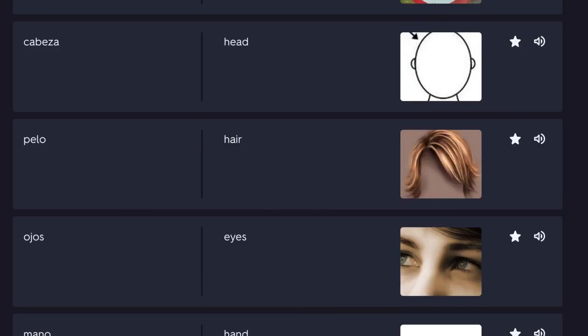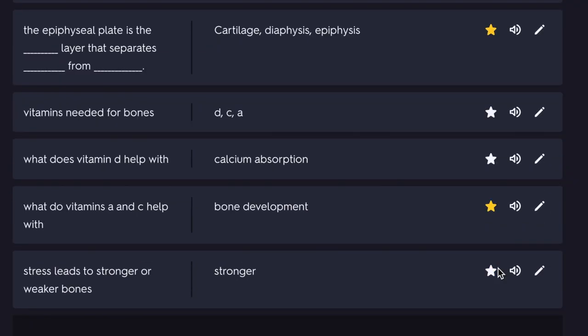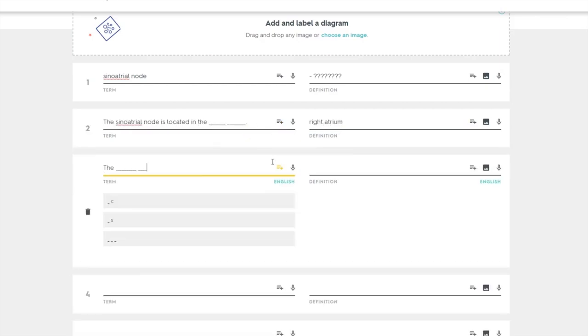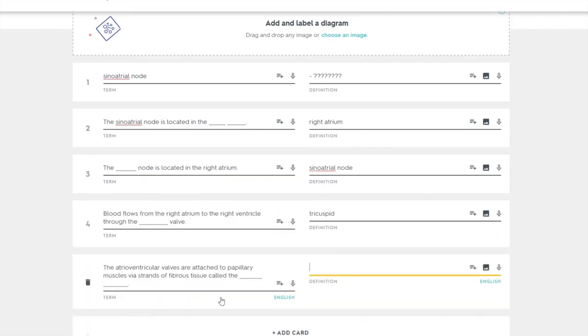Tip number one: ignore people who say that you should only make flashcards by hand. For courses that only require memorization, you can definitely use apps such as Quizlet or Anki to make all your flashcards. For example, for my anatomy and physiology course, I did not even have a notebook and I just used Quizlet to memorize all the information that I needed to know, and I ended up getting A's both semesters.